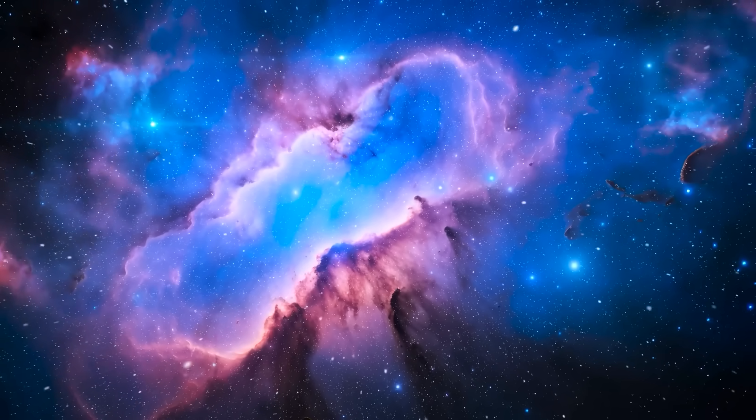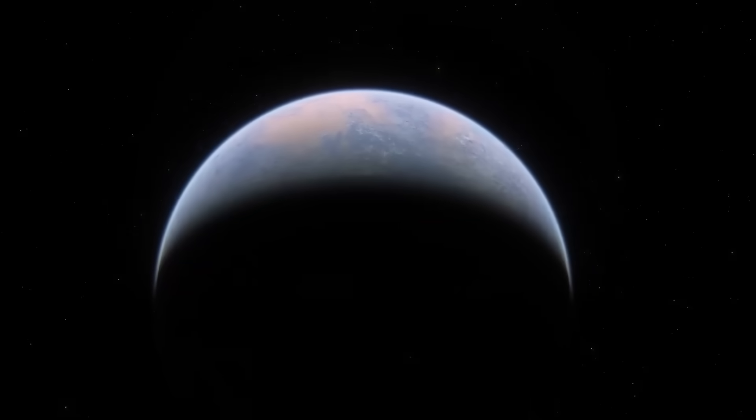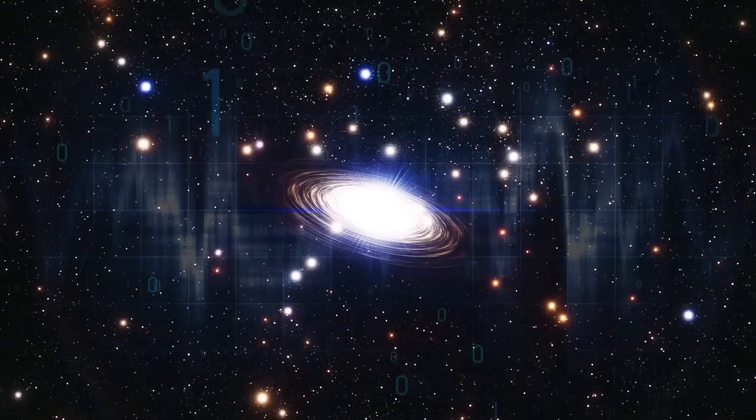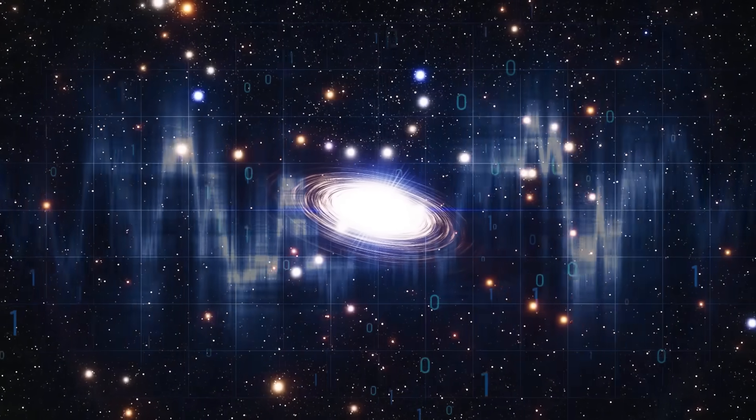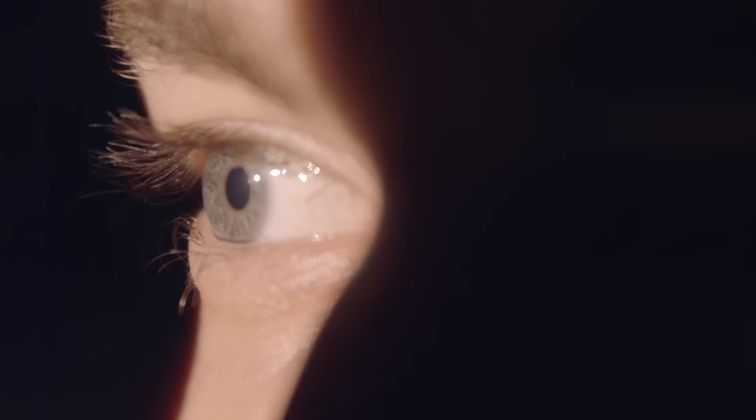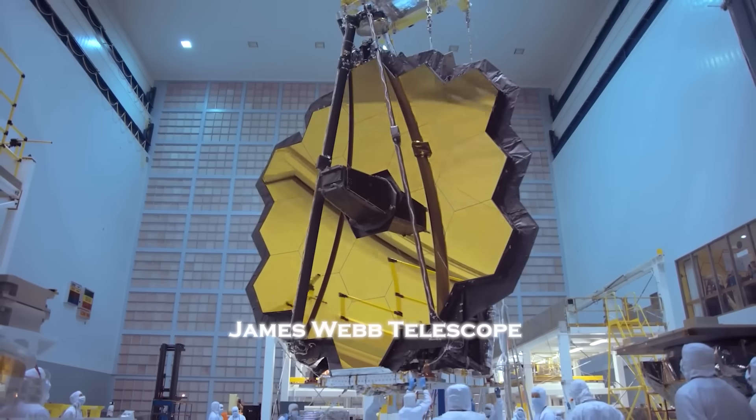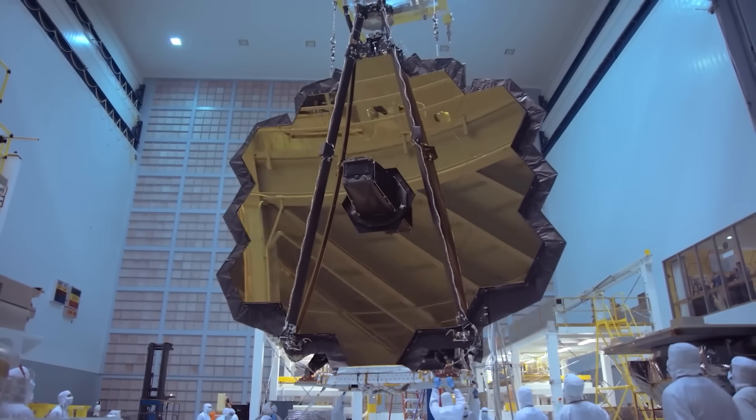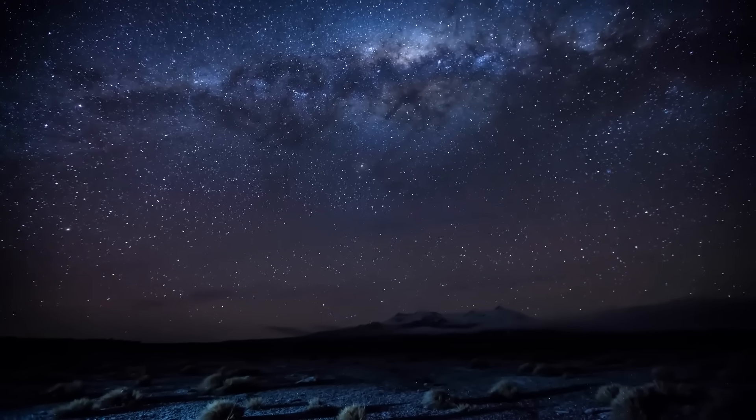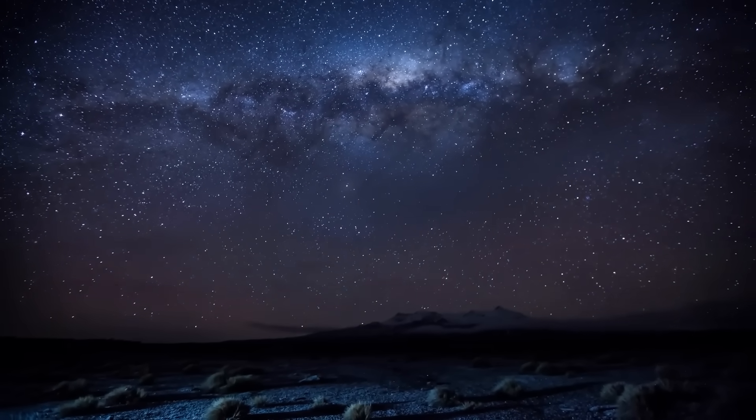Because what the James Webb Space Telescope has just seen wasn't supposed to exist. Galaxies too old, planets too large, structures too perfect, and a signal, steady, rhythmic, and unnatural, that doesn't fit into any known astrophysical model. This isn't just another discovery, this is a collision between what we believed and what actually is. The James Webb Telescope may have just delivered the most profound warning and invitation in human history. And if it's real, then everything we thought we knew about the universe is wrong.